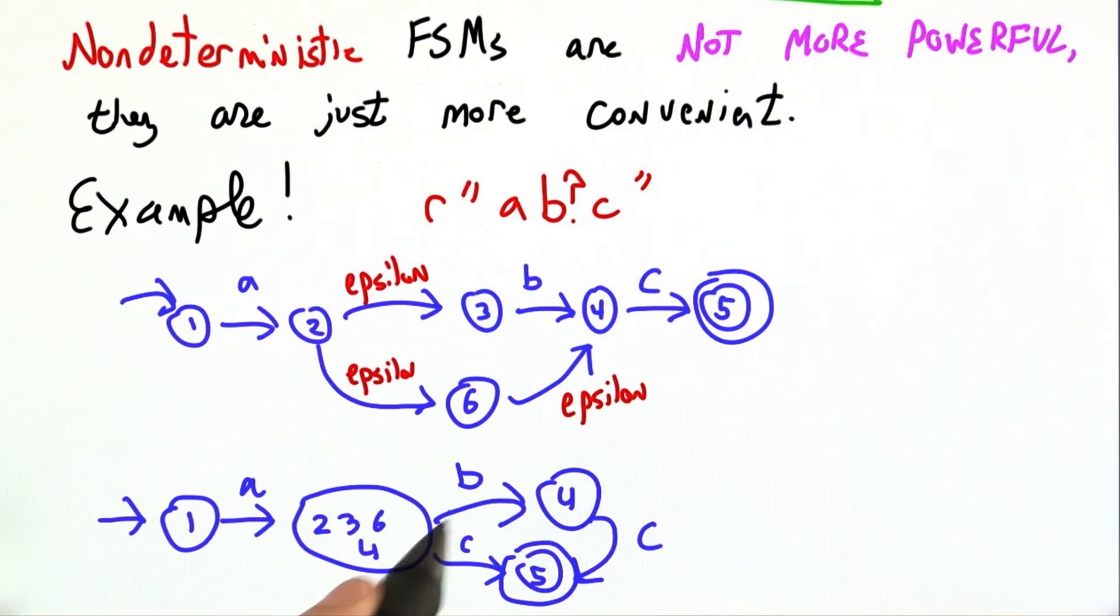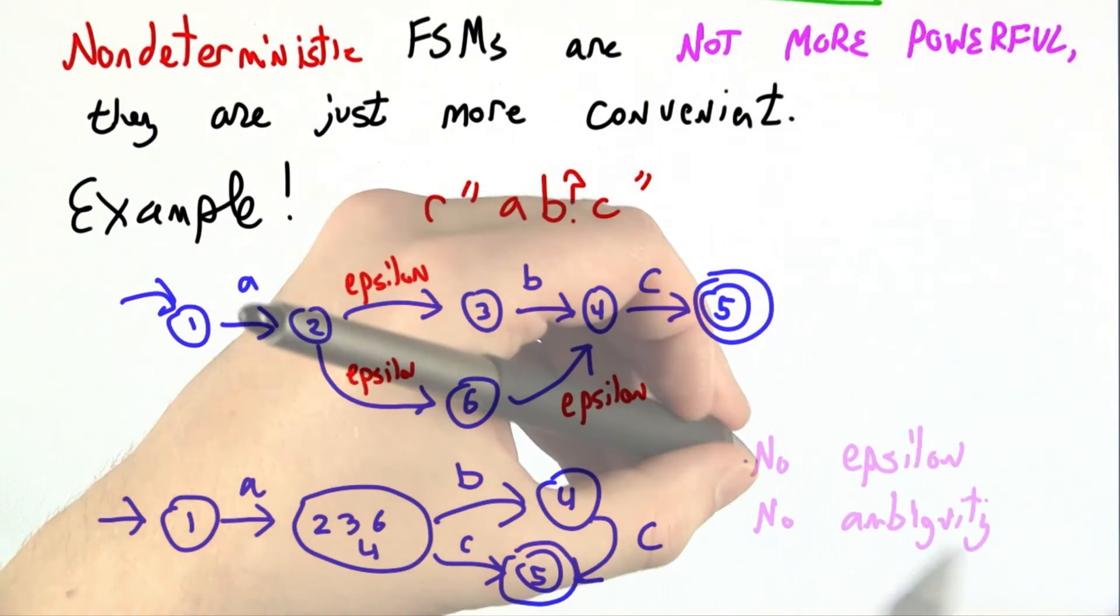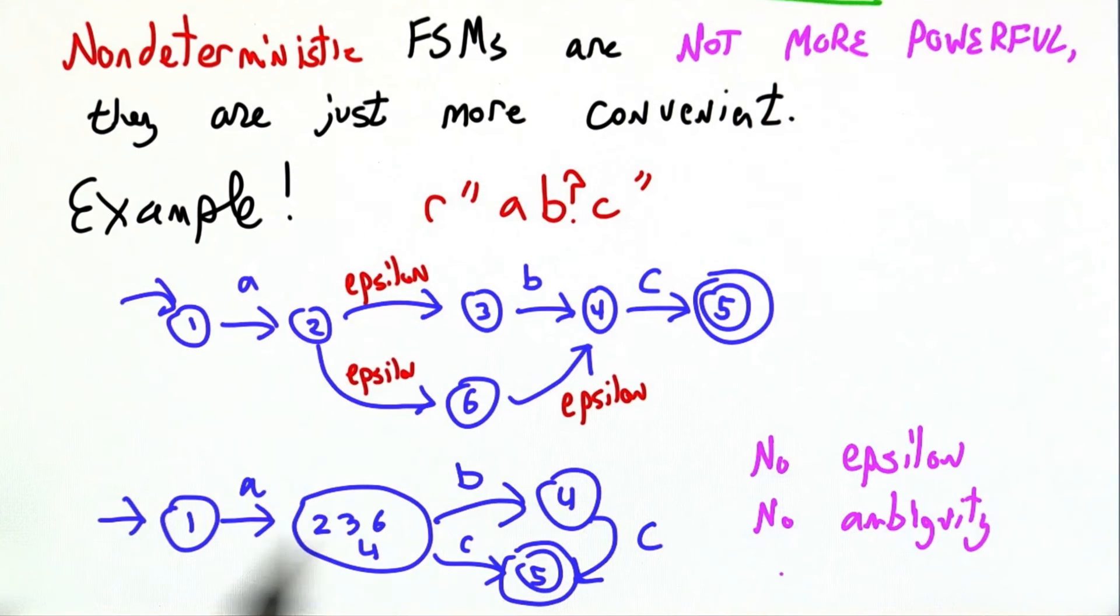So this deterministic finite state machine accepts the same language as the one above. The two strings, a, b, c, and a, c are both in it. But it does not have epsilon transitions or ambiguity. In any particular node, there are never two edges going out labeled a, and there are never epsilon transitions.